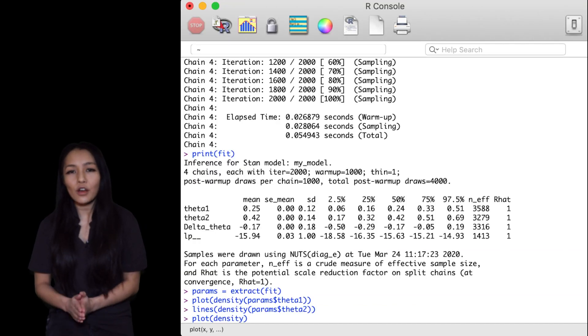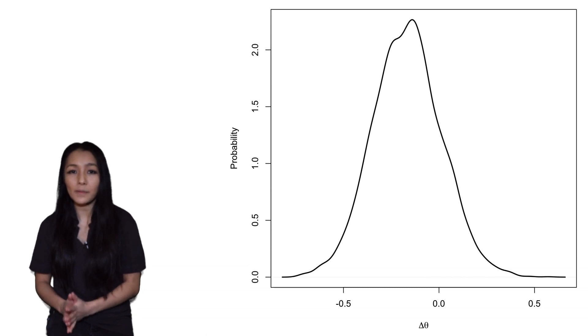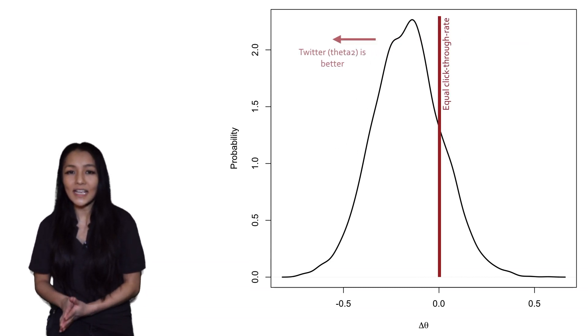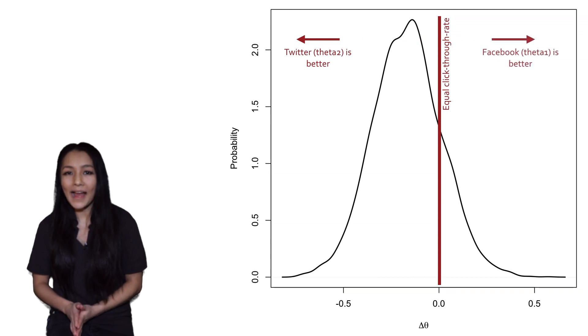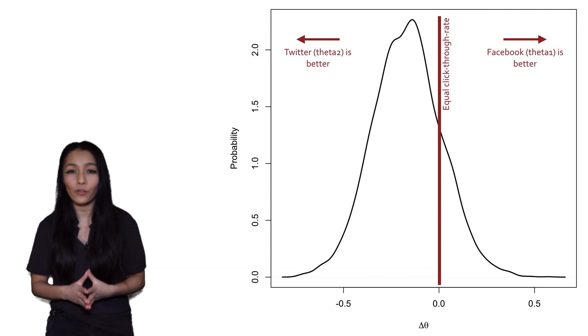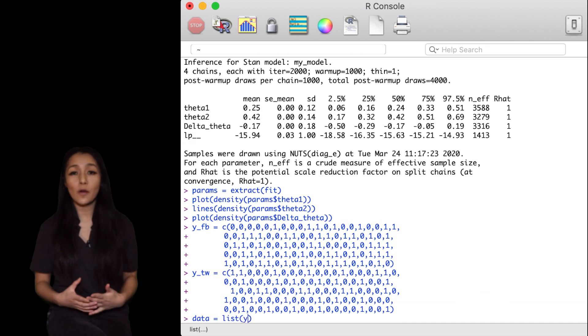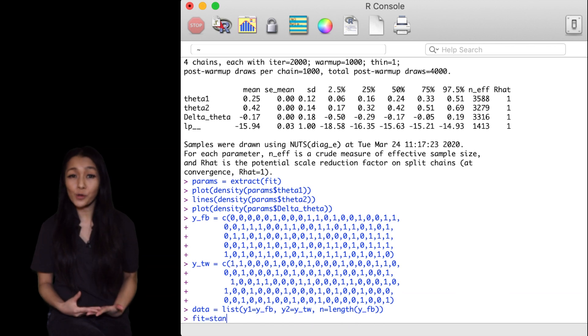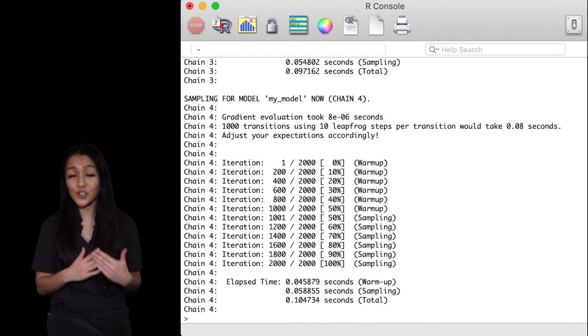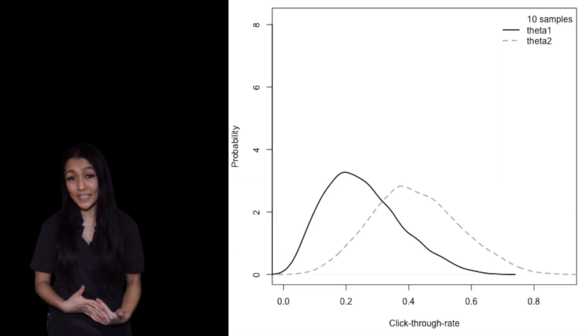We can also plot the distribution of the generated quantity delta theta for a direct comparison. Here, zero means the probabilities are the same, but as you can see there's a lot of posterior mass saying that the theta 1 parameter, the click-through rate for Facebook, could be higher than theta 2, that for Twitter. The uncertainty on our posterior shrinks with the amount of data that we have, so if we rerun the model after a hundred audience limit you will see just that. And now let's keep going with even more data samples.